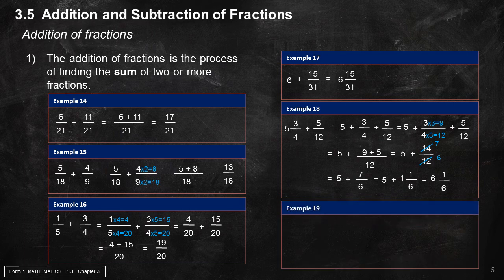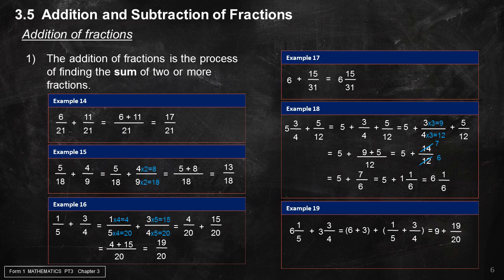Example 19: 6 and 1 over 5 plus 3 and 3 over 4 equals 6 plus 3 plus 1 over 5 plus 3 over 4. This simplifies to 9 plus 4 over 20 plus 15 over 20, which equals 9 plus 19 over 20, giving a final result of 9 and 19 over 20.